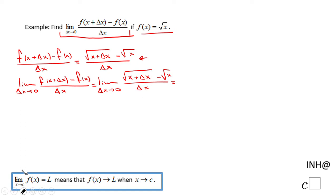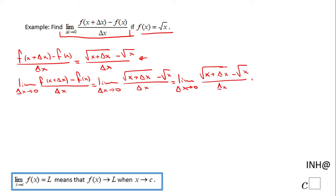Whenever you have radicals like in this case, I'm going to use the following technique: multiply by the conjugate of your expression. In this case, the conjugate of square root of x plus delta x minus square root of x.